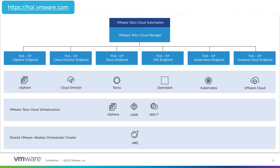VMware Telco Cloud Automation Control Plane supports the following Virtual Infrastructure Manager types: vCenter Server, VMware Cloud Director, VMware Integrated OpenStack, and Kubernetes. In this lab, we focus on Tanzu Kubernetes Grid as the virtual infrastructure.